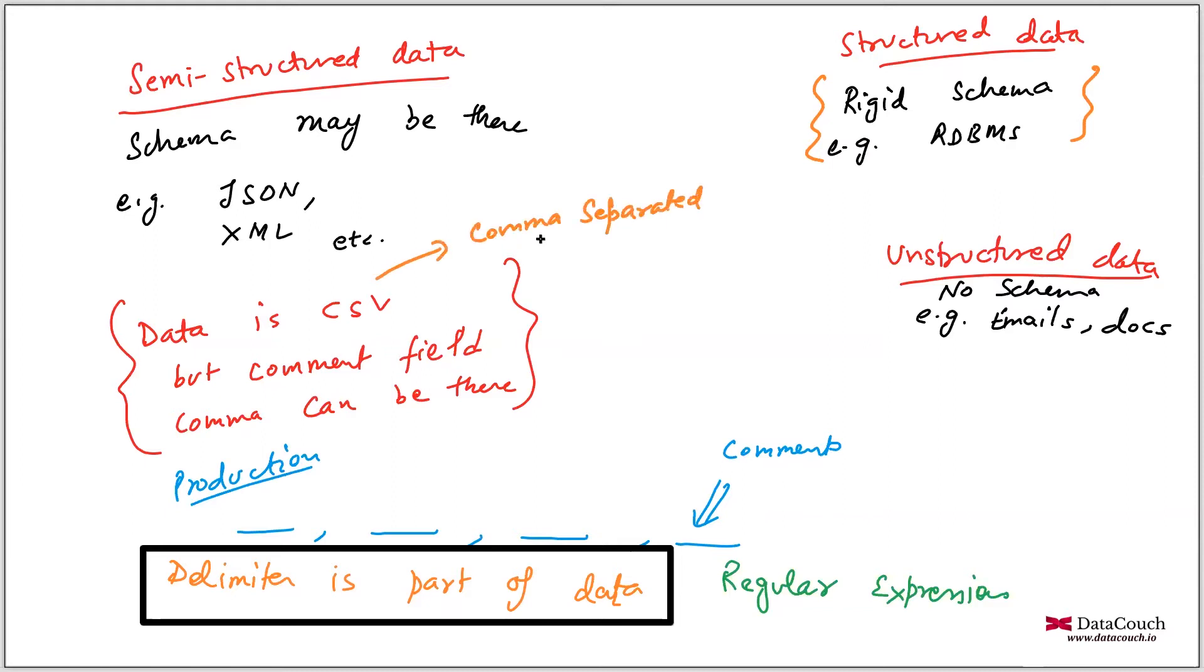If you have a delimiter - this is my delimiter, field delimiter - I'm segregating my data through this comma and it's working fine. But unfortunately we got another field, the comment field, and comma is there in the comment field.